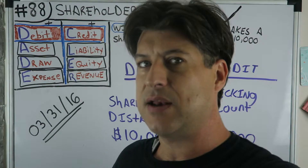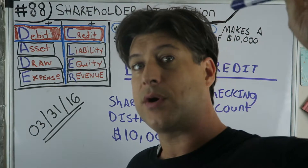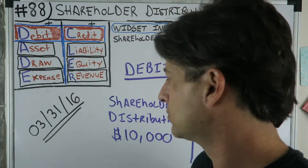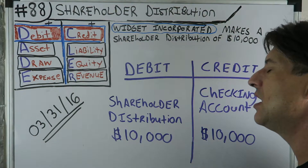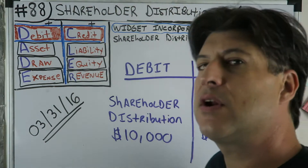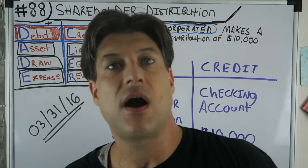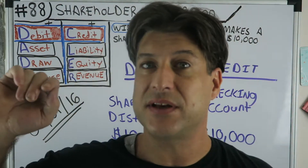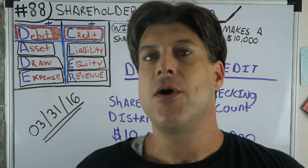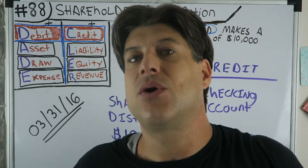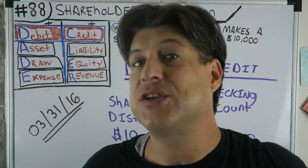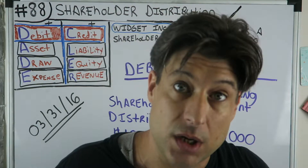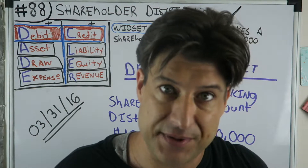We started Widget Inc in 2015, it is now March 31, 2016, so we did a whole year and now we're about at the end of our first quarter of our second year of business. In episode 87 we paid the shareholder back money that he loaned the company before when they started it.